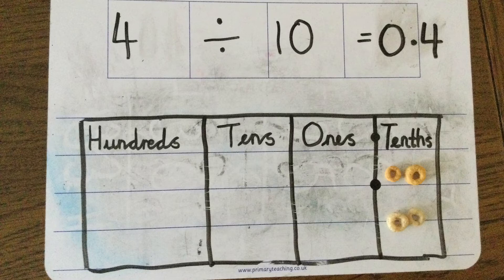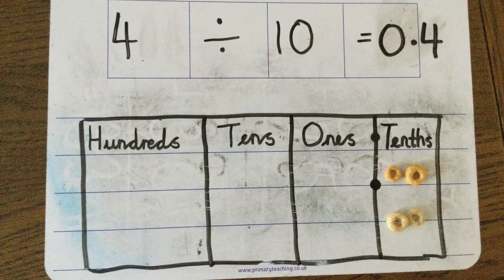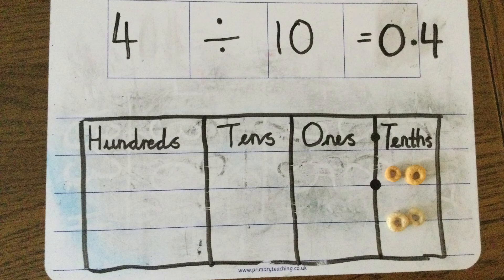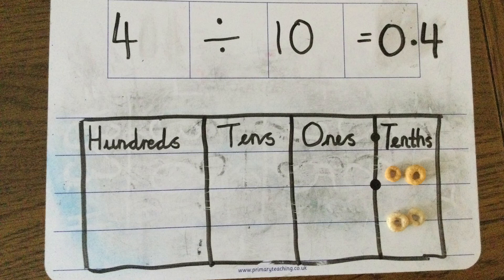So get your cereal out, guys. Grab yourself a piece of paper and a pen and have a go at this. It makes it a lot clearer if you can physically move something along your place value chart. I look forward to seeing all your cereal pictures and videos very soon. Well done, everyone. Keep up the good work.